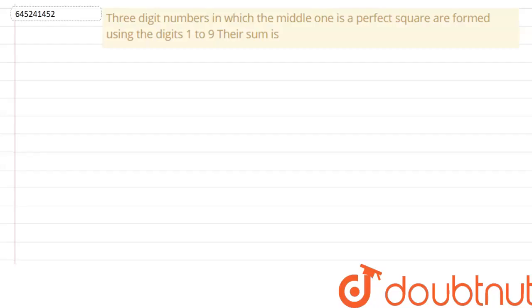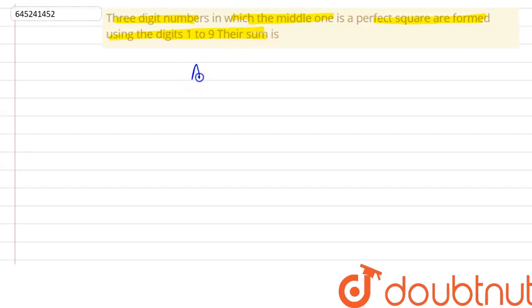The question is: three-digit numbers in which the middle one is a perfect square are formed using digits one to nine, and their sum is to be found. We are given a three-digit number — let us suppose it to be A, B, C — where B is our middle digit.